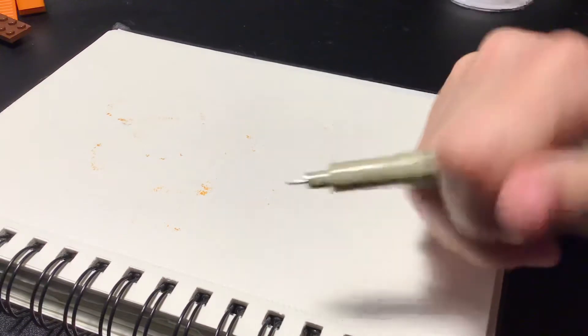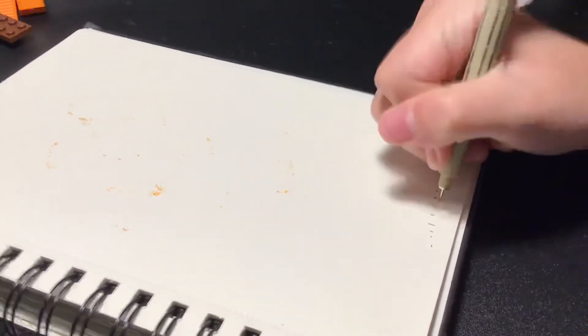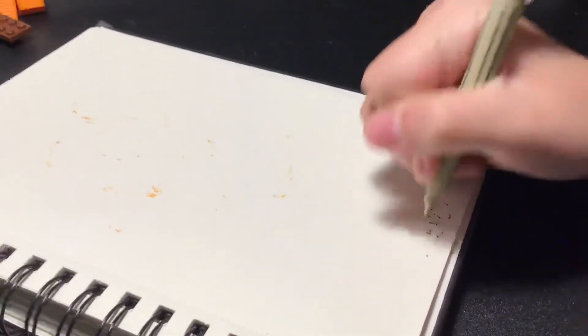So step one is you're gonna take your pen like this. Dots, just like this, kind of building up to a triangle.